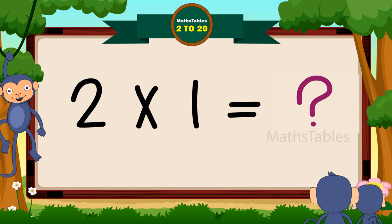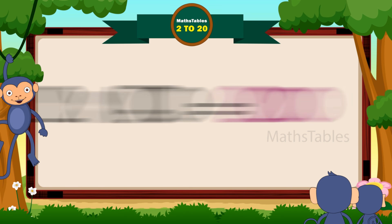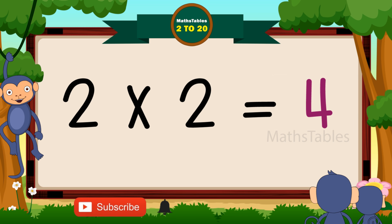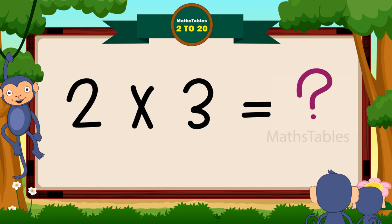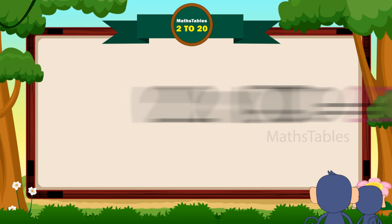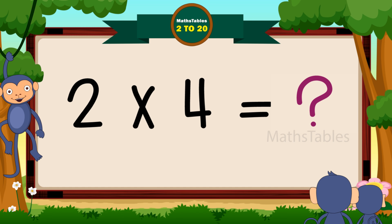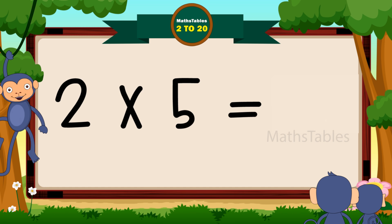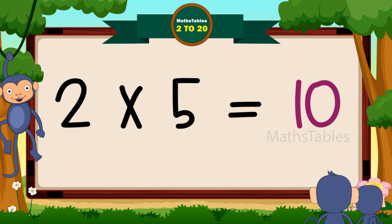Two ones are two. Two twos are two, two twos are four. Two threes are six. Two fours are eight. Two fives are ten.